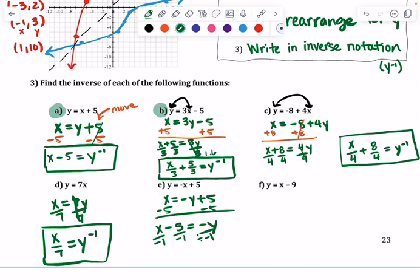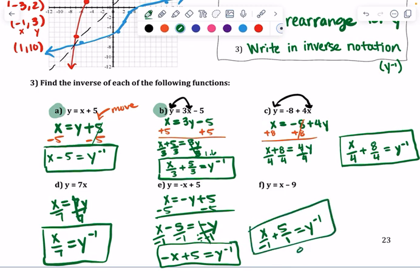So if you want to leave it a fraction you can, but really x divided by negative one is just -x. Negative y by negative is a positive, cancels, leaves you with your y. Put your inverse notation. But if you guys left it as that with the fractions, that's okay.